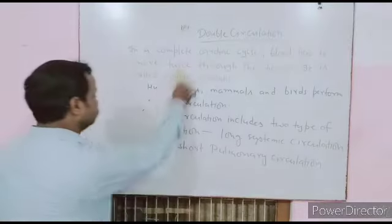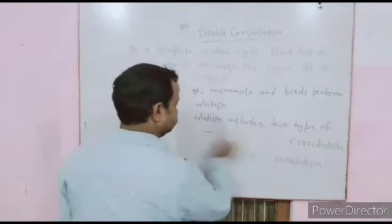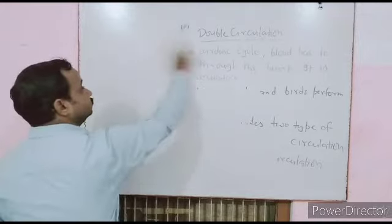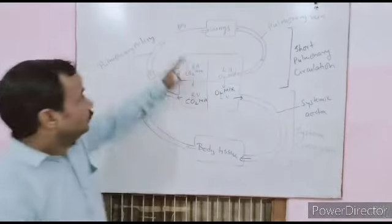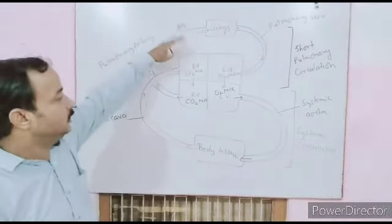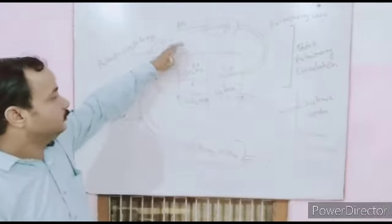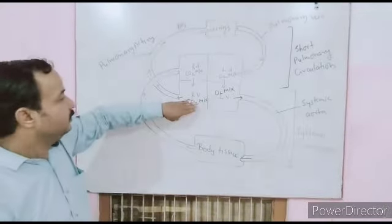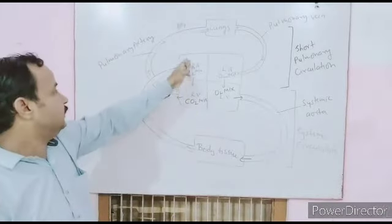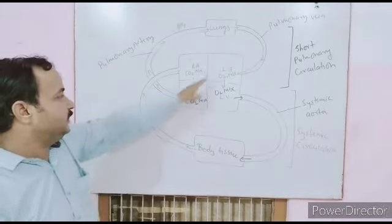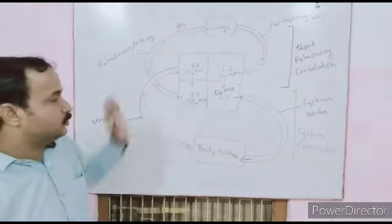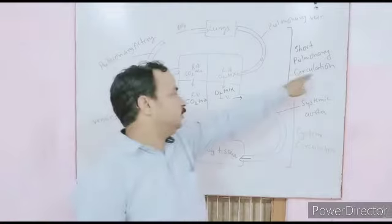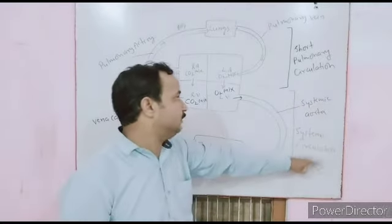Let's see the double circulation in the human being using the diagram. We can see the right ventricle, the left ventricle. This gives us the two types of circulation: short pulmonary circulation and long systemic circulation.